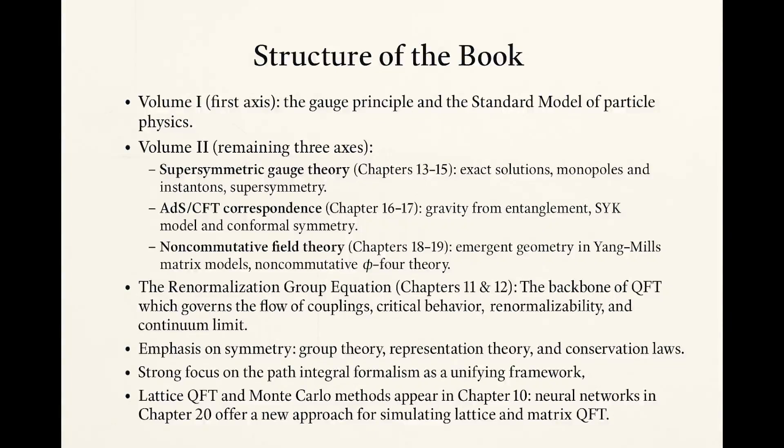In Volume 1 of this book, we focus primarily on the first axis — the gauge principle and the standard model of particle physics. The other three axes are examined in detail in Volume 2. The second axis, supersymmetric gauge theory, is partially addressed, with groundwork laid in chapters 13 through 15, which cover exact solutions, monopoles and instantons, and supersymmetry.